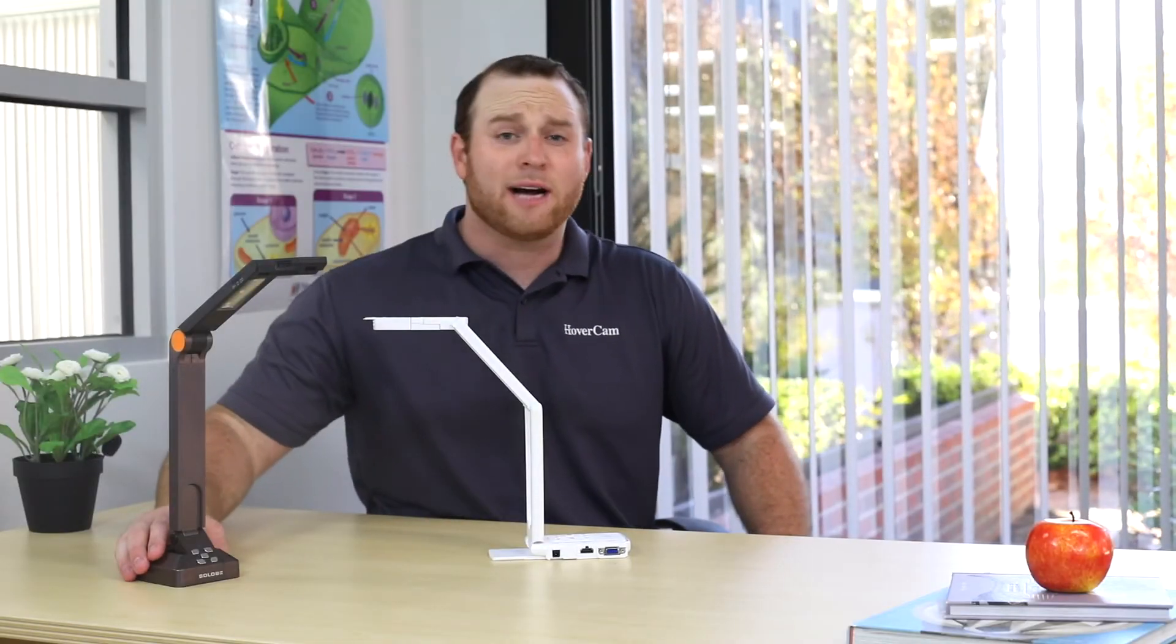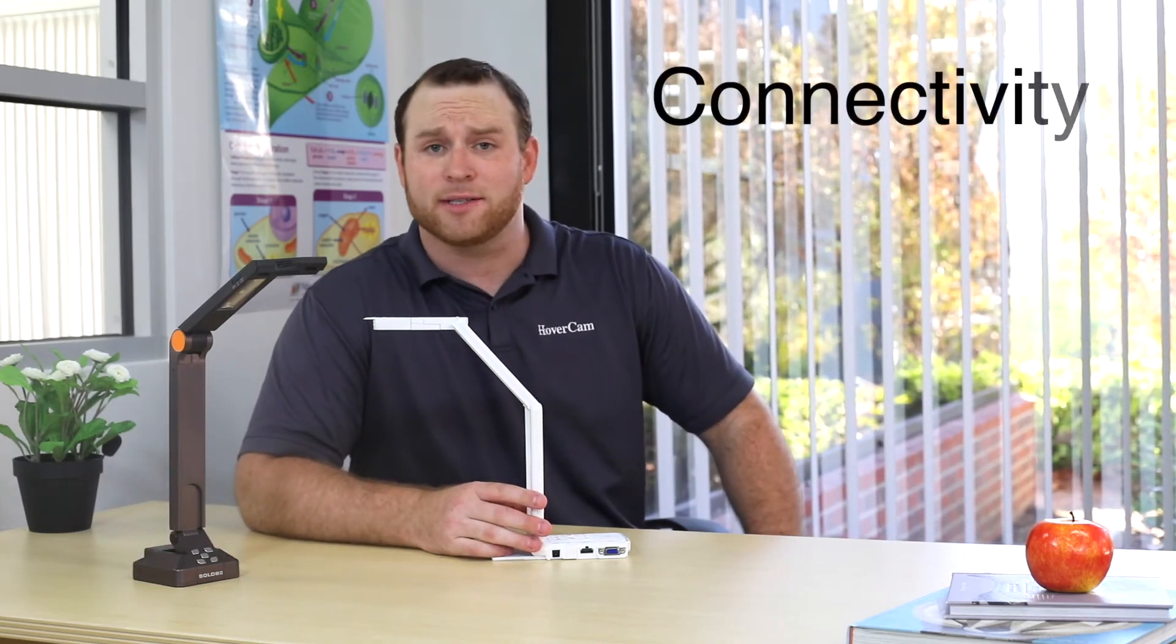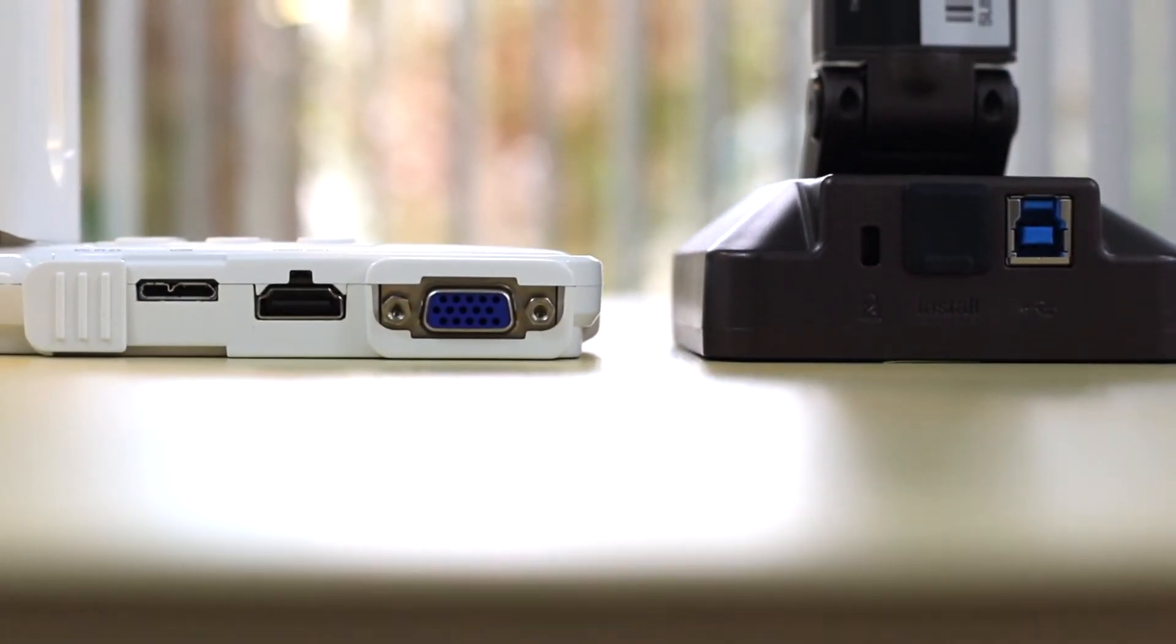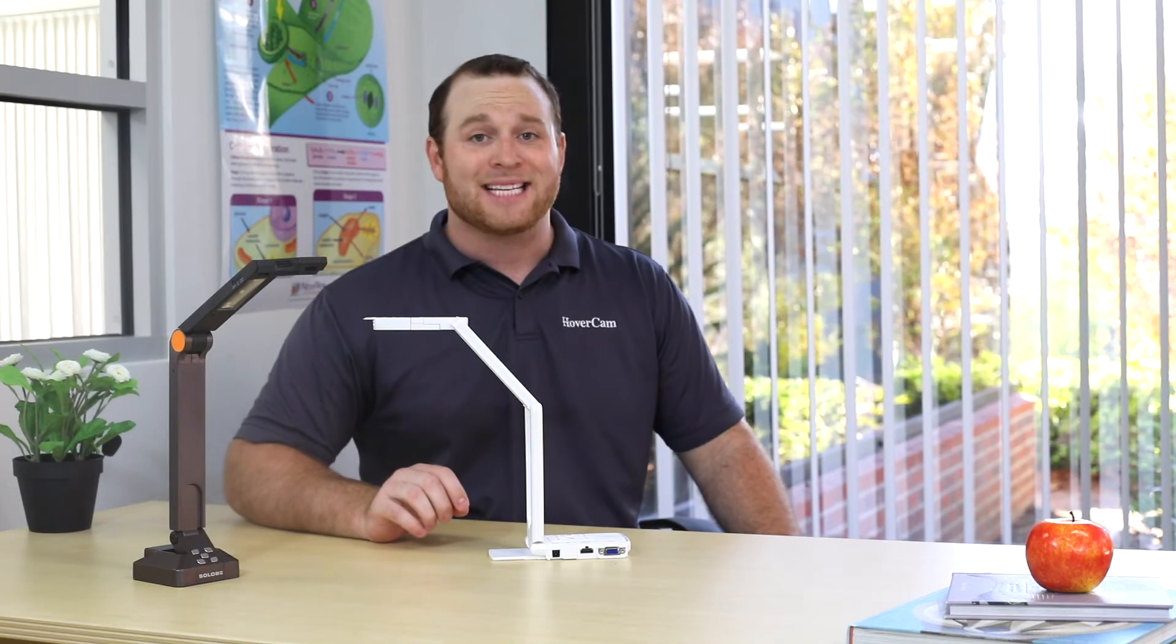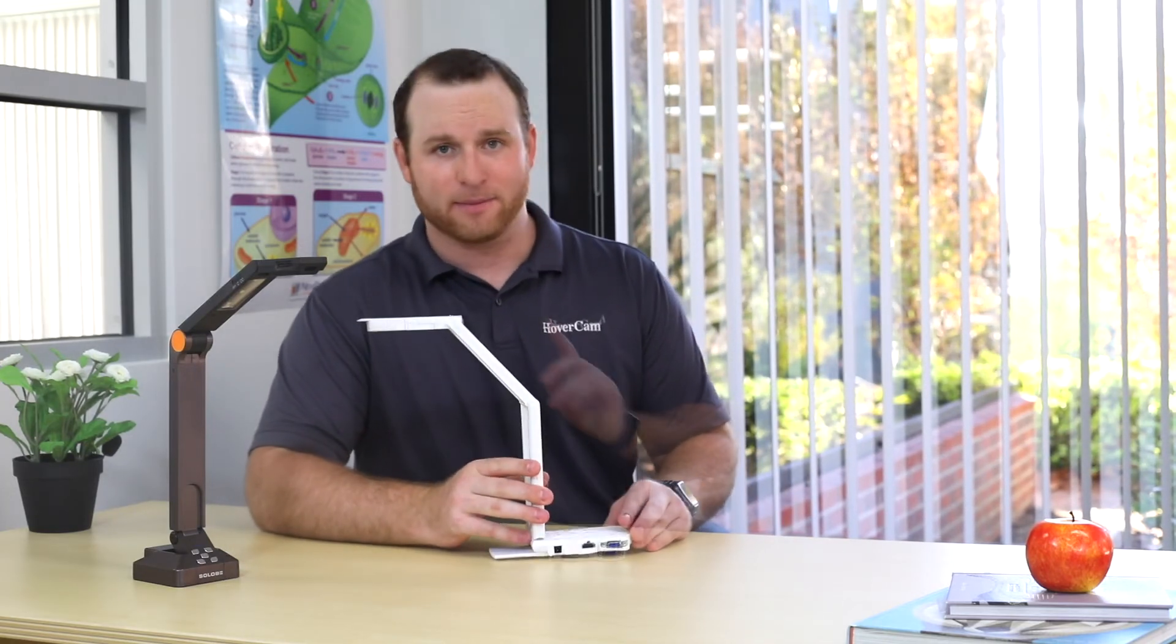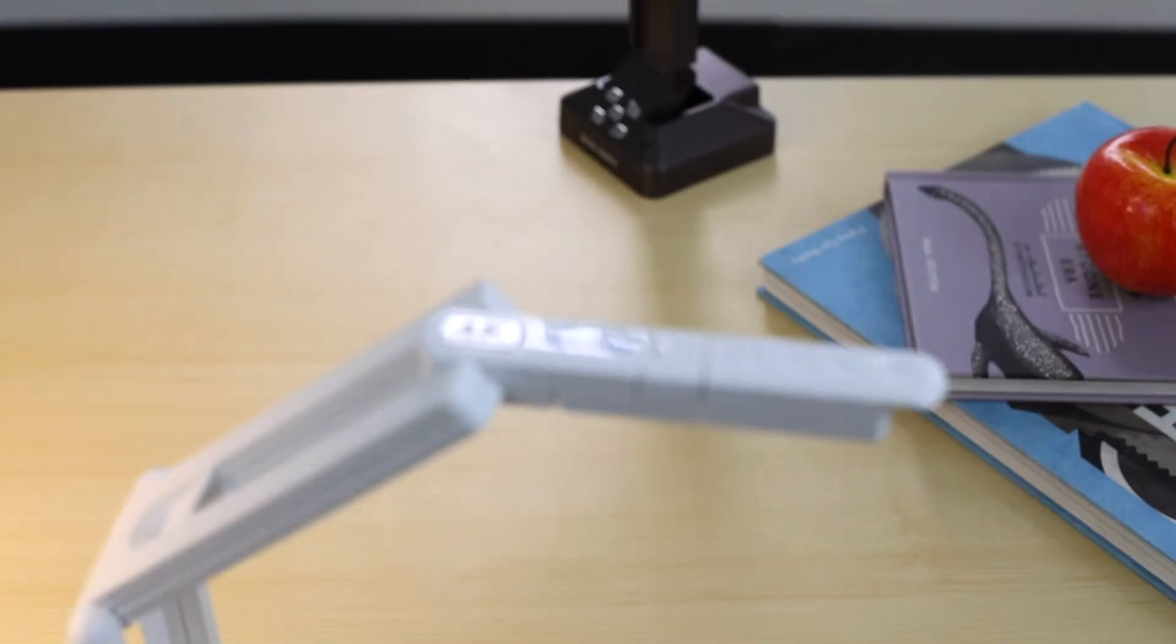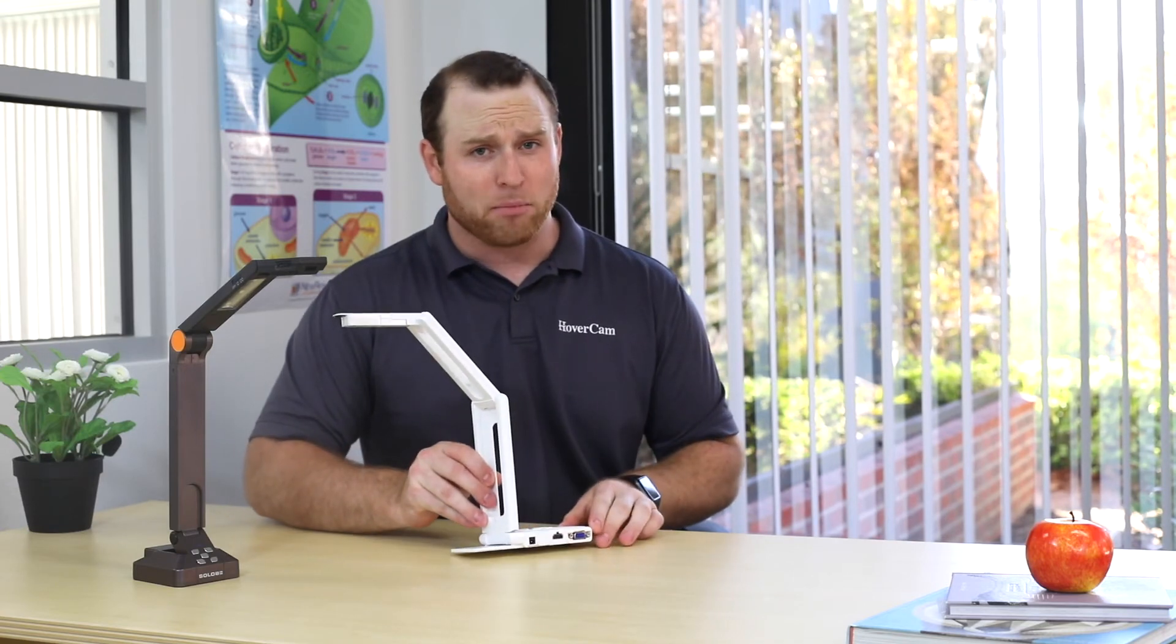While the Solo 8 Plus outshines the MXP in most categories, the MXP is certainly more versatile when it comes to connectivity options. Both cameras have USB ports for use with your computer, but only the Elmo MXP has HDMI and VGA outputs for direct-to-display connectivity. Now, when using the Solo 8 Plus, you could always output to any display from your computer, so keep that in mind. And you should also know that just because the MXP has a 4K sticker on it, you can't get 4K out of the HDMI or VGA ports.